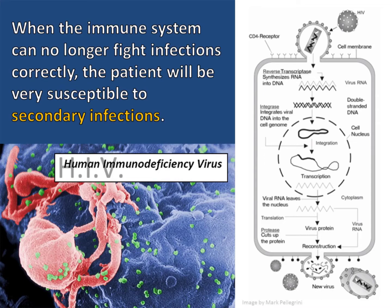When the immune system can no longer fight infections correctly, the patient will be very susceptible to secondary infections. This means that when they get the flu, pneumonia, a staph infection, or any other infection, their body will not be able to fight it normally, and this could lead to even more serious complications including death.